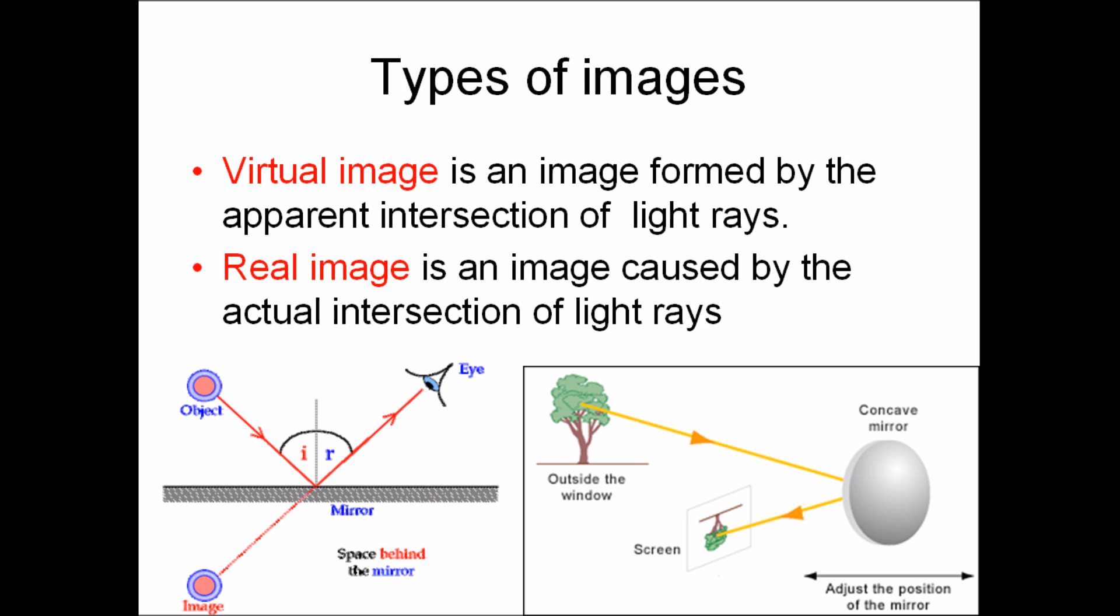Virtual images are formed by the apparent intersection of rays. You can see this type of image in a mirror. Real images are formed by the actual intersection of rays. These definitions will be further discussed in my video on spherical mirrors.